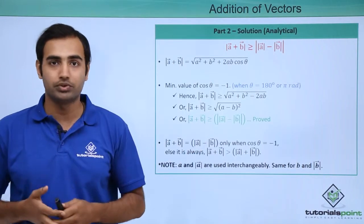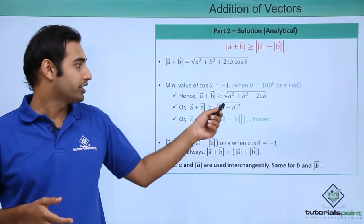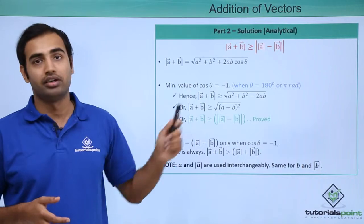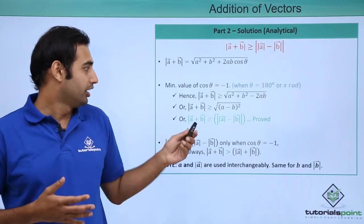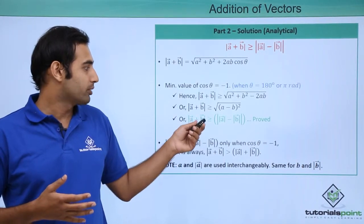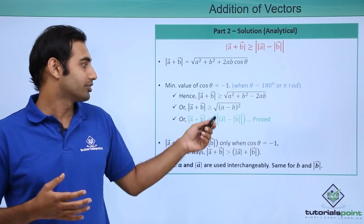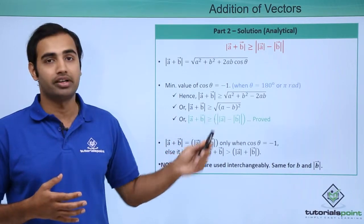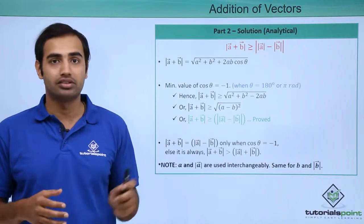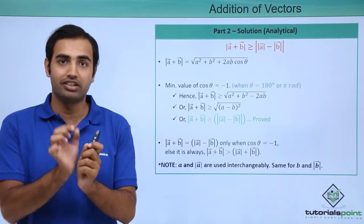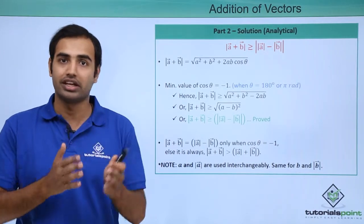This expression, when cos theta equals minus 1, is once again a perfect square — specifically of A minus B. So I can write it as the square root of (A minus B) whole squared. After solving, I get modulus of A plus B is always greater than or equal to modulus of mod A minus mod B. The external modulus sign is present because we are interested in the value of the difference, not its sign.